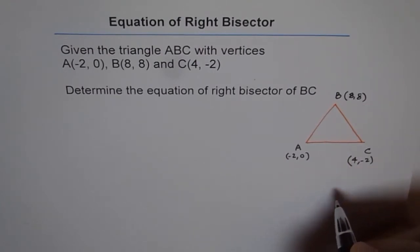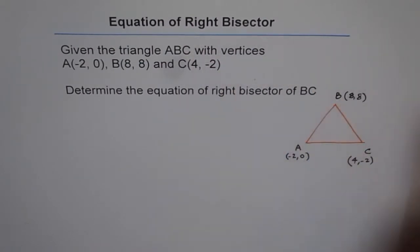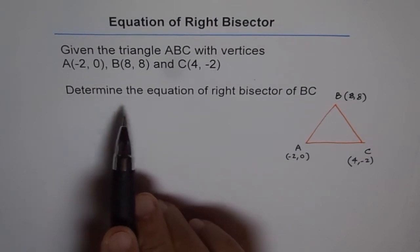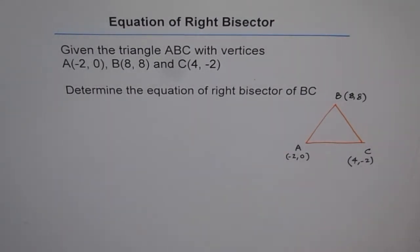Now when you say right bisector, what is the meaning of right bisector? Right means the line should be perpendicular and bisector means it should bisect the line into 2 equal halves. So it says, determine the equation of right bisector of BC.